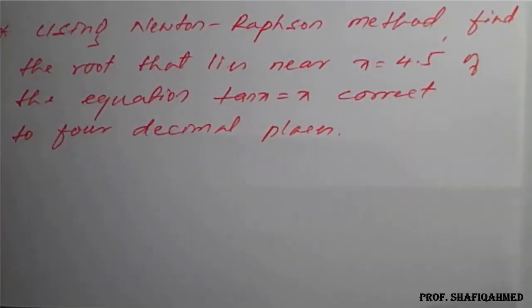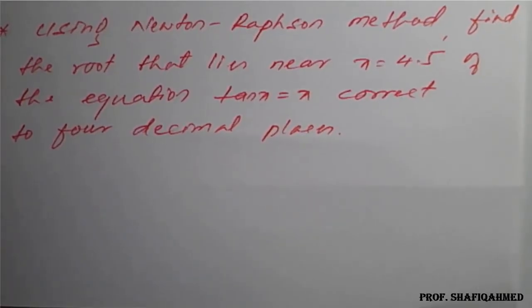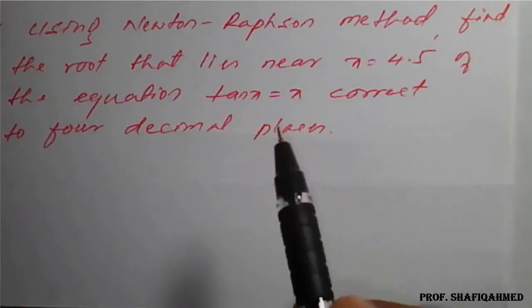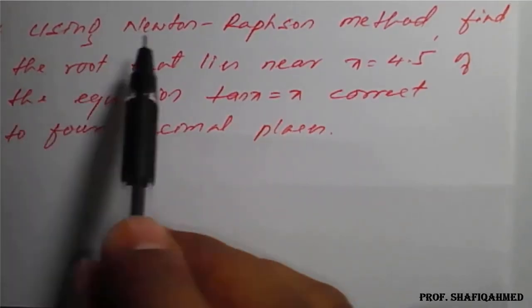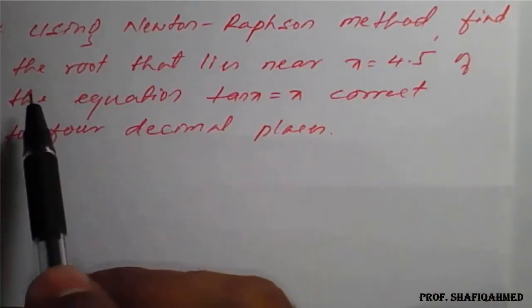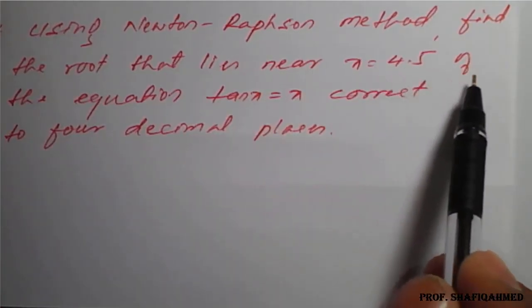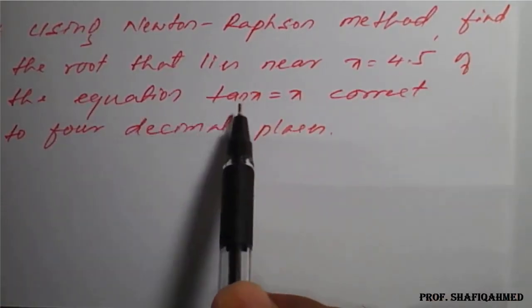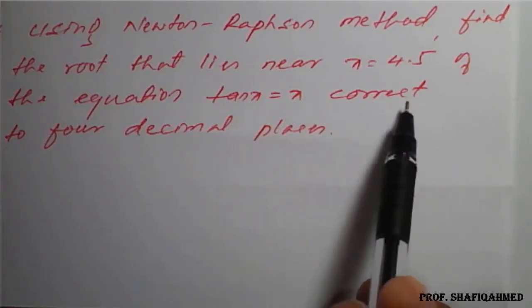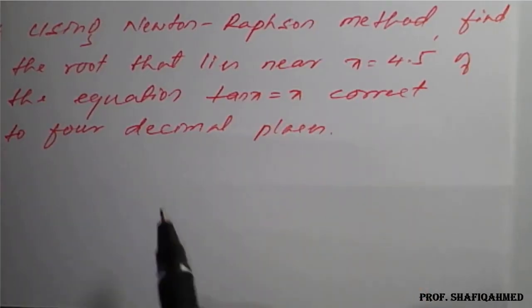Hello students. In this lecture, we will see a problem based on Newton-Raphson method. The problem is: using Newton-Raphson method, find the root that lies near x equals 4.5 of the equation tan x equals x, correct it to 4 decimal places.